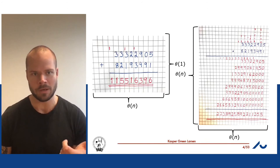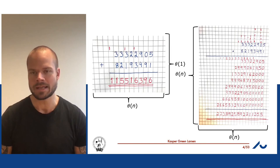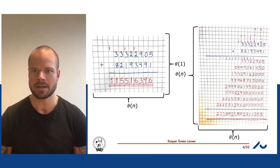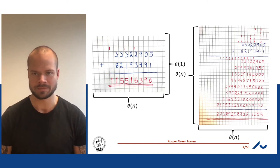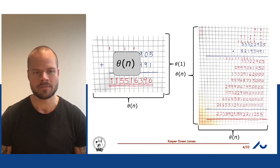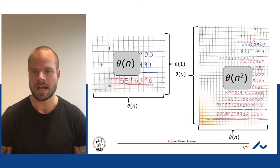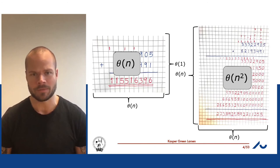For multiplication, each line has Θ(n) digits — the result of taking one digit and multiplying through the entire other number — and you have n such lines. So it's n lines with n digits each. The addition takes Θ(n) time — linear time in the size of the inputs — whereas multiplication takes quadratic time. So multiplication uses a lot more paper than addition.